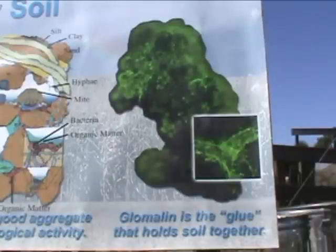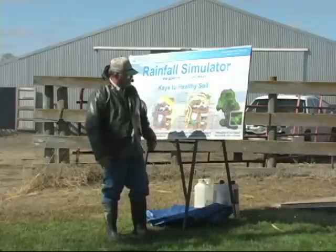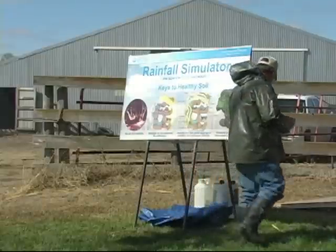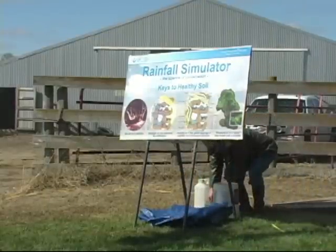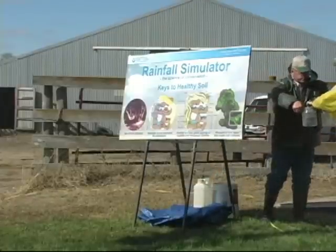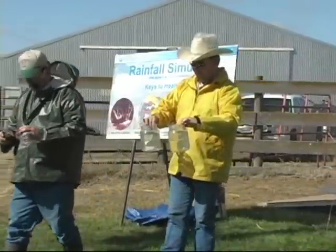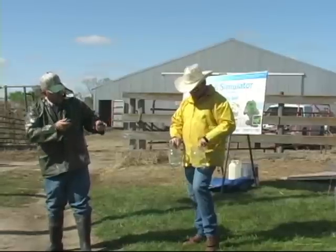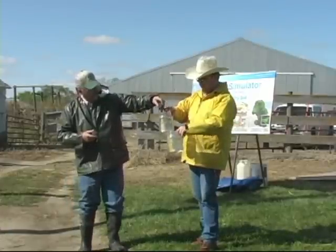One of the byproducts we know of primarily from fungal development within soils is a glycoprotein called glomalin. This happens to be stained green — it's typically brown within soils. But that's one of those products that actually holds soil together. I have a very simple demonstration I like to do — I have a no-till clod, and you can see all the wormholes. I also pulled out a conventional till clod. I like to put that in water and just see how water-stable those aggregates really are.